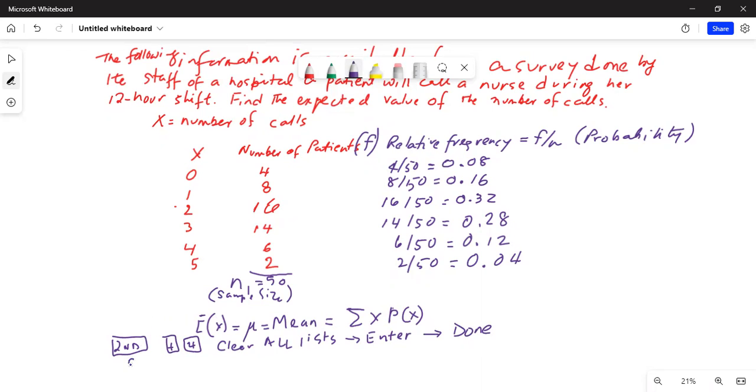Next step you press stat and then select number one, which is the edit button. So enter x values in L1 and probability values in L2.